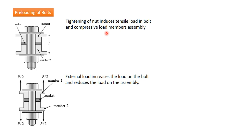When we apply an external load, this increases the load on the bolt and reduces the load on the assembly. Some part of the applied load P is taken up by the assembly due to its stiffness, and some part by the bolt. This is discussed in detail in another video; here we are only introducing the term preloading.